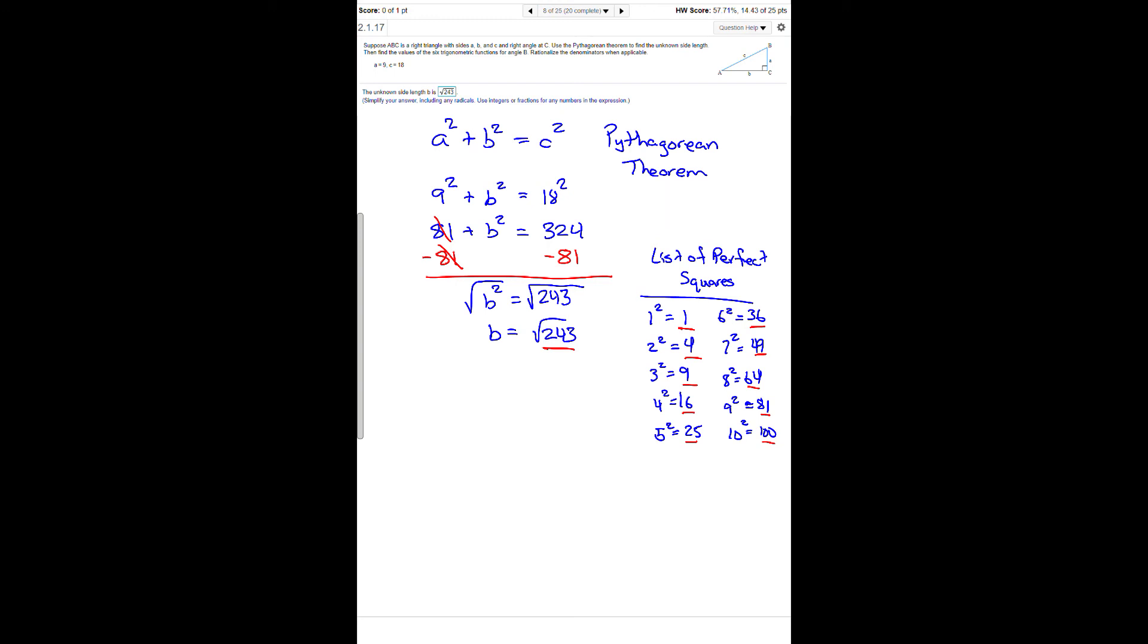Actually, yes we do. If we take 243 and divide it by 81, we get 3.